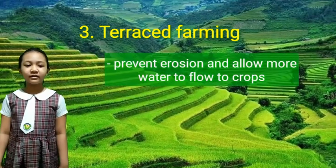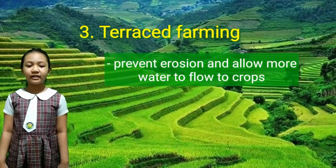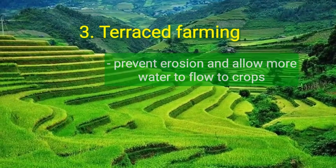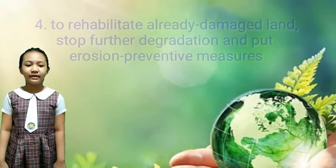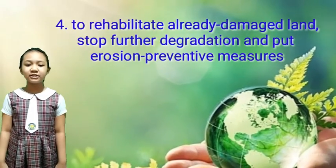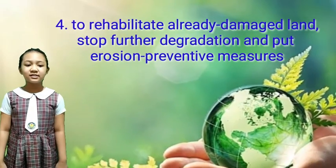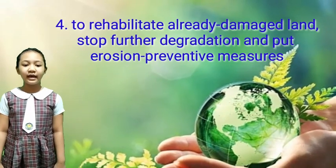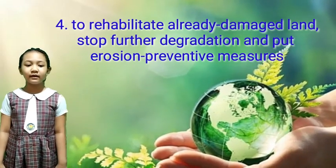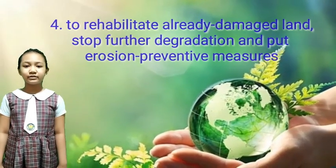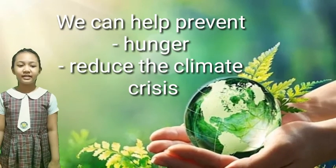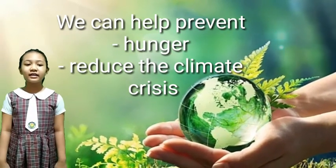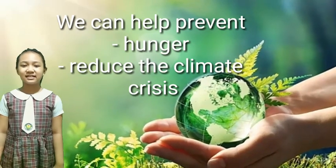Terraces prevent erosion and allow more water to nourish crops. 4. To rehabilitate already damaged land, stop further degradation and put erosion prevention measures in place. In this way, we can help prevent hunger and reduce the climate crisis.